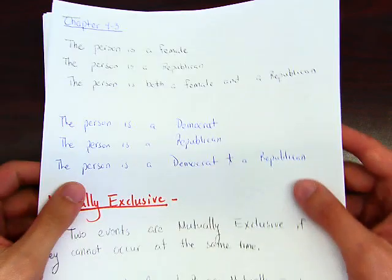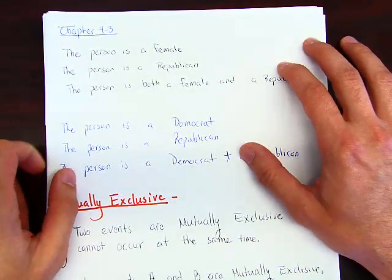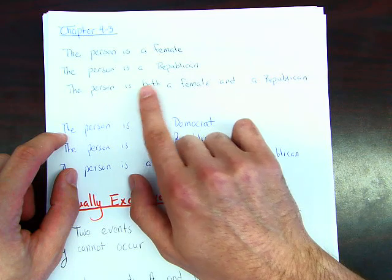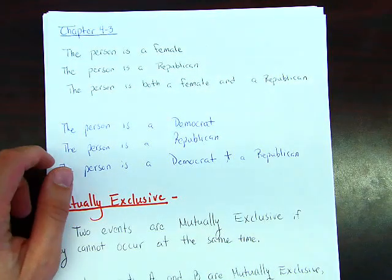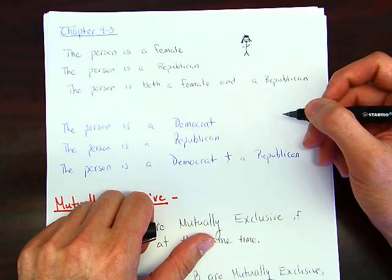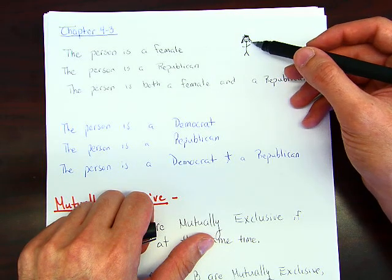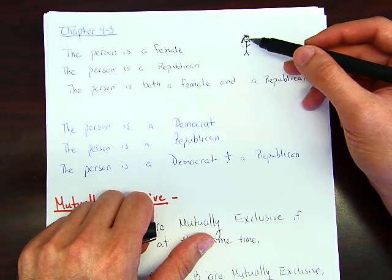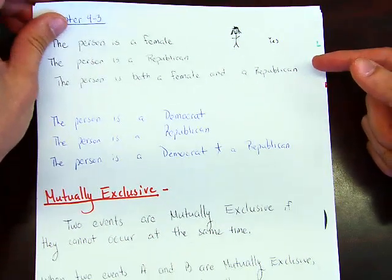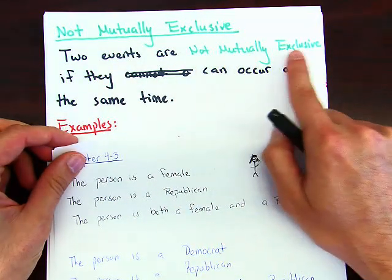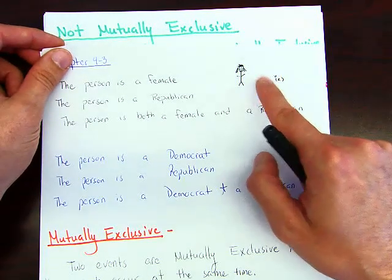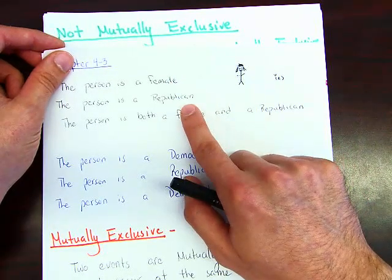Let's go over this example together. Consider: the person is a female, the person is a Republican, the person is both a female and a Republican. Let's imagine we have some female who is also a Republican — is this possible? Yes, this is possible. When this happens, we say two events are not mutually exclusive if they can occur at the same time.